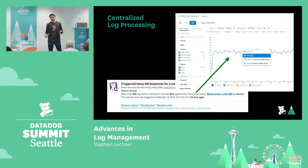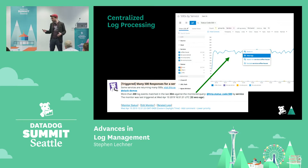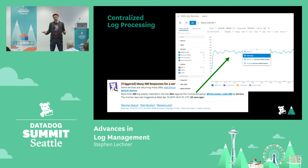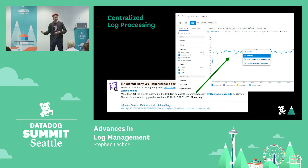That was the first of the two tricks Kevin employed for a smooth investigative process. The second trick he used was this: he was able to go from a monitor alert to a query showing the count of all 500s across his entire organization, regardless of what service generated them or what team owned that code.